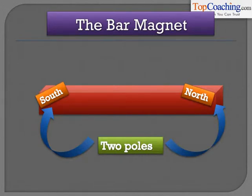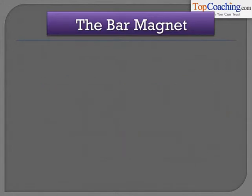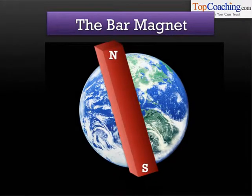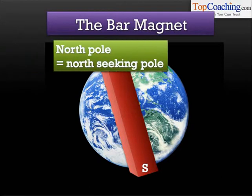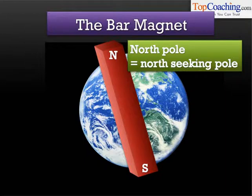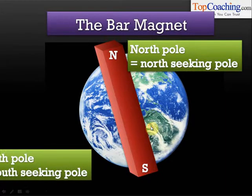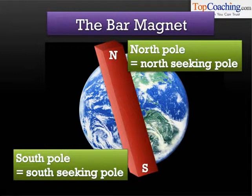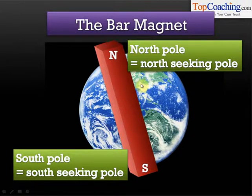Why are the two ends of a bar magnet called the north pole and the south pole? That is simply because when you hang a bar magnet freely — when you suspend it from a thread — it assumes such a direction that the north pole points approximately towards the north pole of the earth, and the south pole points approximately towards the south pole of the earth. You can try it at home: suspend a bar magnet from a string and you will see that one end points north and one end points approximately south.